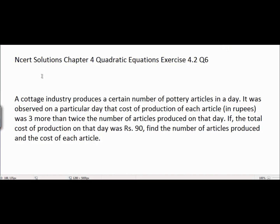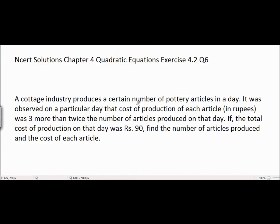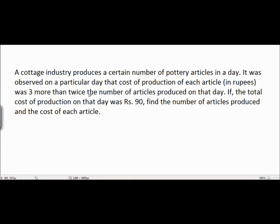This is NCRT Solutions Chapter 4, Quadratic Equations, Exercise 4.2, Question 6. The problem is: a cottage industry produces a certain number of pottery articles in a day. It was observed on a particular day that the cost of production of each article in rupees was 3 more than twice the number of articles produced on that day. If the total cost of production on that day was rupees 90, find the number of articles produced and cost of each article.